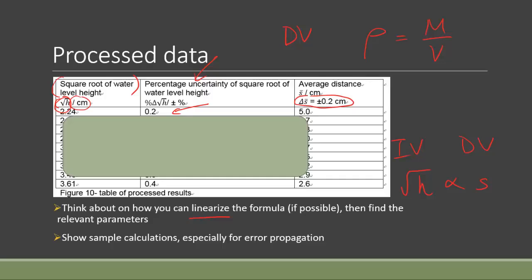After you finish the process data table, you should also provide sample calculations, especially for error propagation, showing how you can calculate all the values in your table. For some simple calculations like square root h, those would not be required. Even in the IB exam they said taking the average is not required, although I would say if you have space then you can still include it.